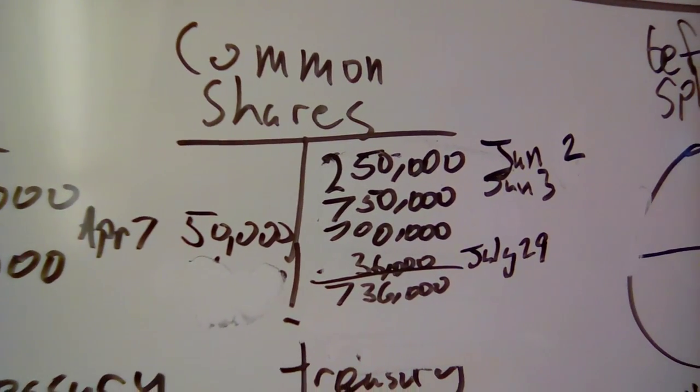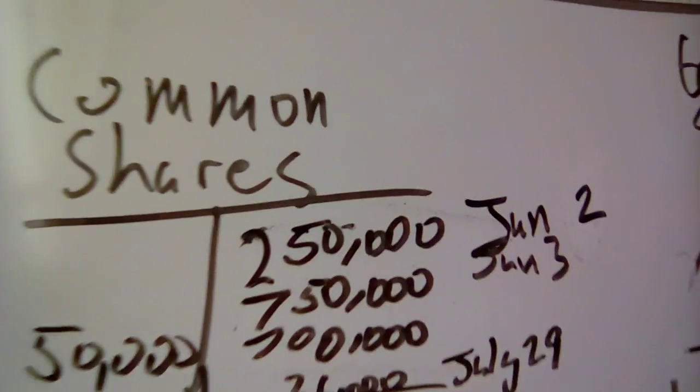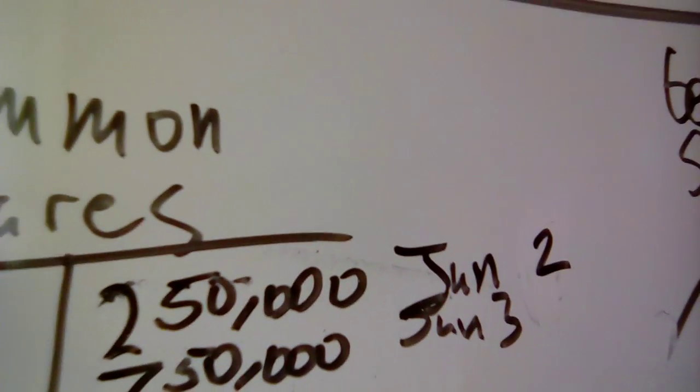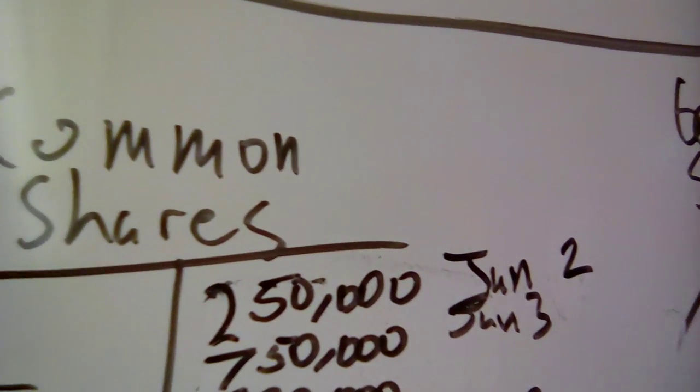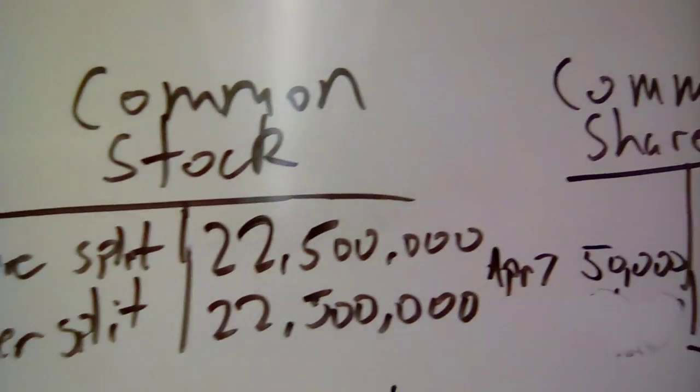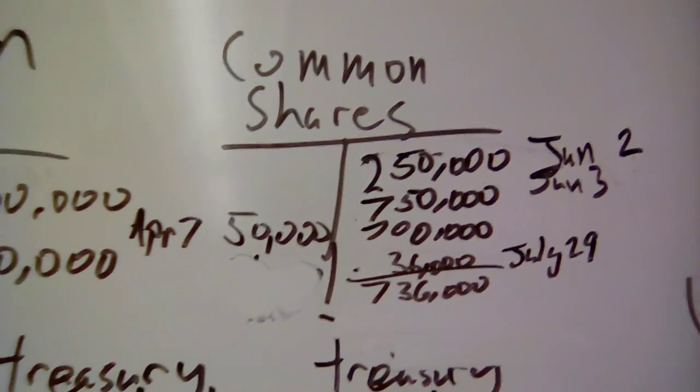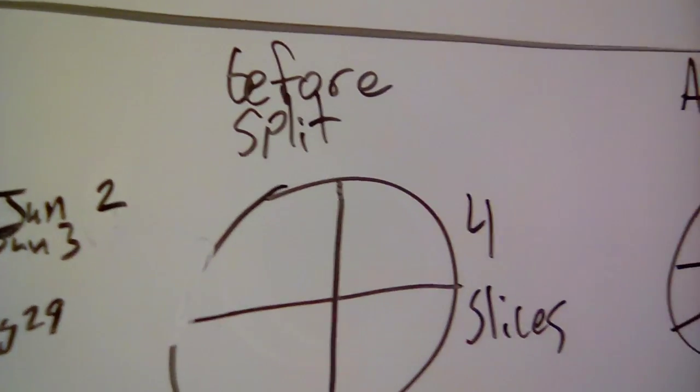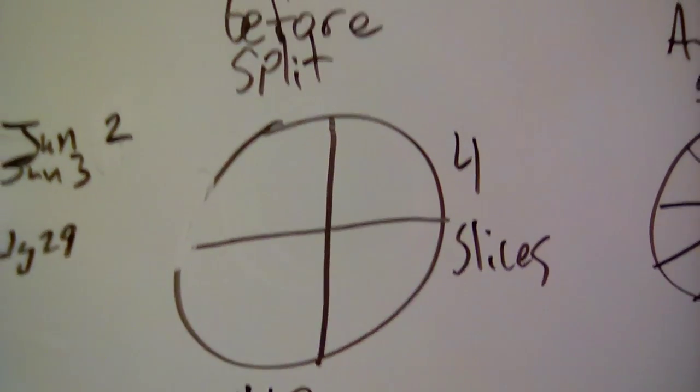You start with 250,000 shares, you split them three for one, now you have 750,000 shares. That's what that is. And you want to make sure you date things as you go because it just makes your life easier in accounting. And you're going to want to use these T-accounts to track everything because it's just going to streamline what you're going to be doing. And here's an example, a visual example.